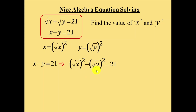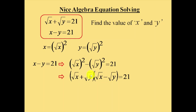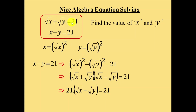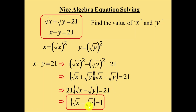Expanding using the a squared minus b squared formula, the equation becomes: square root of x plus square root of y, multiplied by square root of x minus square root of y, equals 21. Since square root of x plus square root of y is given as 21, we substitute that in. The equation becomes 21 into square root of x minus square root of y equals 21. Dividing both sides by 21 gives square root of x minus square root of y equals 1.